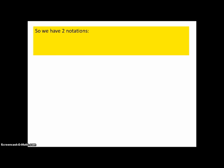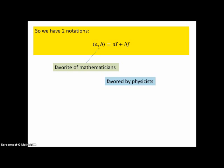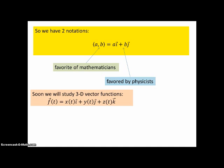So we have two notations. In chevrons, (a, b). And in unit notation, we have ai plus bj. Now, mathematicians tend to prefer the chevrons. It's easier to write. The second way is favored by physicists. I'm not sure why that is, but we will go between the two. Sometimes we'll use one. Sometimes we'll use the other.